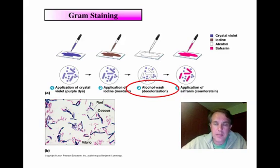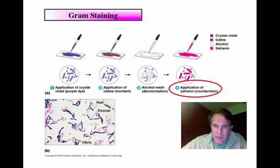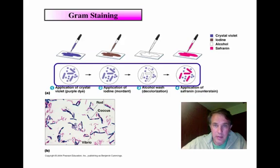In Gram-positive cells, the alcohol dehydrates that thick peptidoglycan layer and actually makes it more impermeable to the crystal violet-iodine complex. In Gram-negative cells, the effect is very different — the alcohol dissolves the outer membrane and leaves small holes in the thin peptidoglycan layer, which allows the crystal violet to wash out of the Gram-negative cells, leaving them colorless. In the final step, to see the Gram-negative cells, we use a counter stain called safranin, which is pink, since it won't overcome the purple but will be visible. Here you can see the Gram-negative cells are bacillus in shape and the Gram-positive ones are cocci, and this actual photograph shows rods and cocci under a microscope — Gram-positive rods and some Gram-negative vibrio-shaped bacteria.